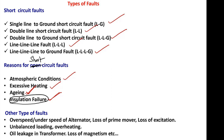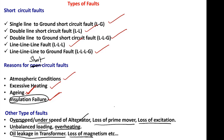Other types of faults that do not classify as open circuit or short circuit include over-speed and under-speed of alternator, loss of prime mover of alternator, loss of excitation of alternator, unbalanced loading on the alternator, overheating of transformer, oil leakage in transformer, and loss of magnetic flux inside the core.